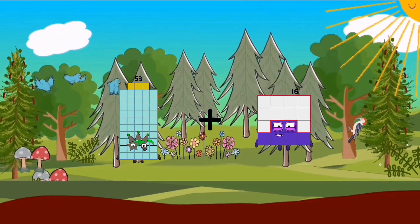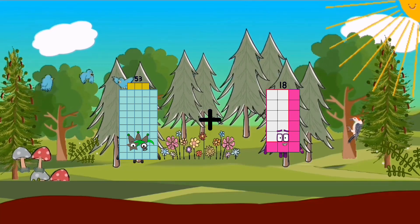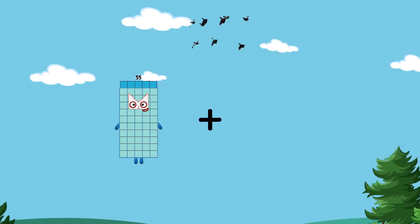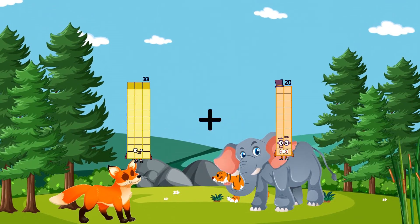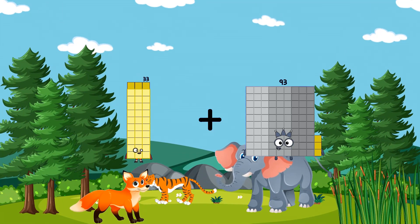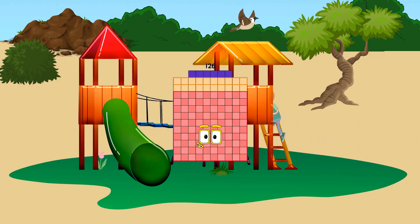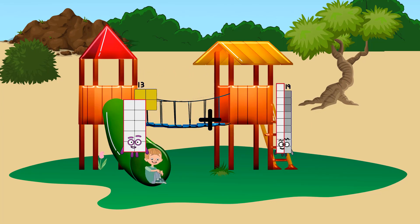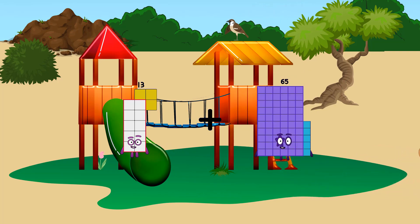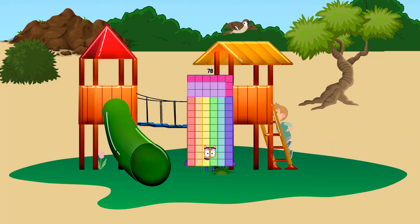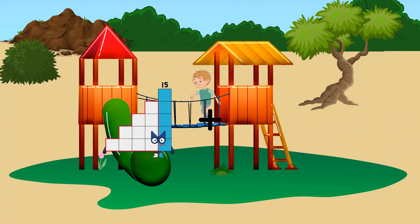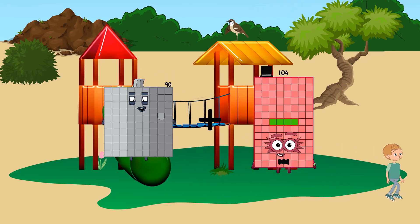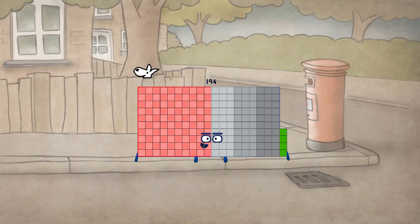53 plus 18 equals 71. 33 plus 93 equals 126. 13 plus 65 equals 78. 90 plus 104 equals 194.